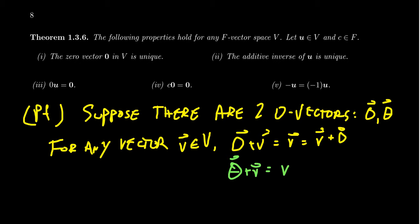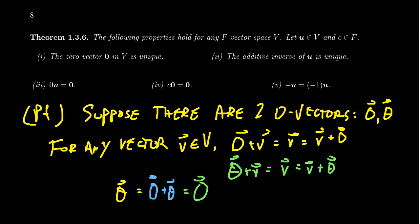Now consider what happens when you compute zero plus theta. Because zero is a zero vector, zero plus theta equals theta. But on the other side, if theta is a zero vector, then theta plus zero equals zero. So theta equals zero, meaning both vectors are one and the same thing, thus proving that the zero vector is unique.